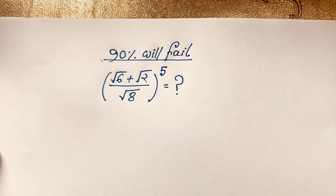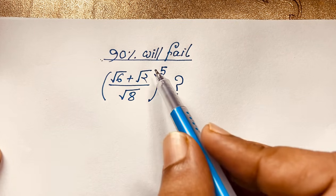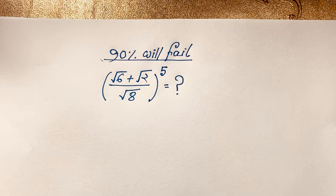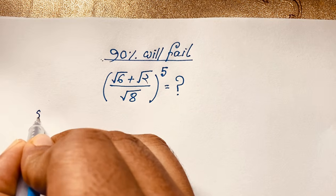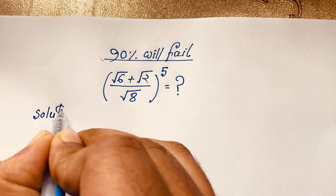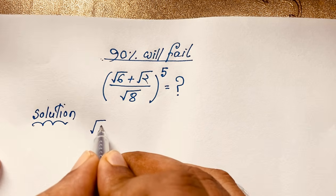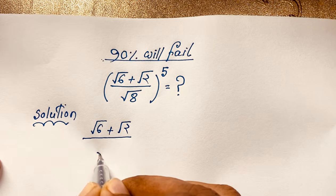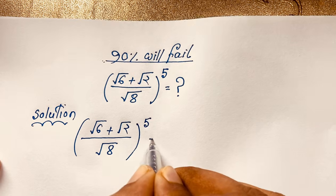Hello everyone, welcome to Russia's Classroom. Today we are solving an interesting radical math question, which is: the square root of 6 plus square root of 2, over square root of 8, all to the power 5 — is equal to what? Let's look at how to solve and simplify this math problem.